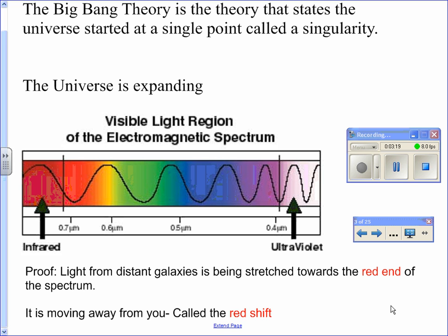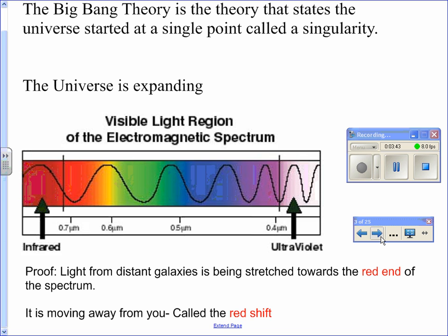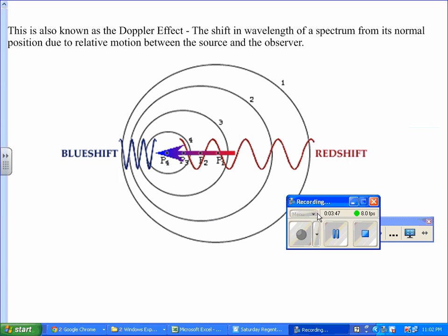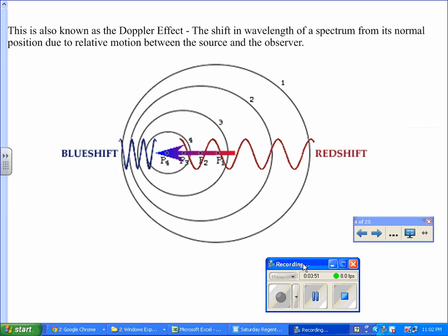Another type of proof they tend to ask sometimes is what we call the cosmic background radiation. Instead of the red shift, they may ask you what type of proof that the universe is expanding or that a Big Bang had occurred. This whole idea here is also known as the Doppler effect, the shift in wavelength of a spectrum from its normal position due to relative motion between the source and observer. If the object with sound or light is coming towards you, the wavelengths are going to be shorter—this is called the blue shift. If the wavelengths or the object is moving away from you, the wavelength is being stretched out—this is the red shift.